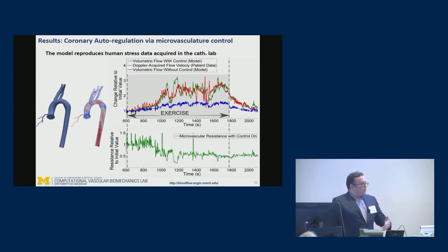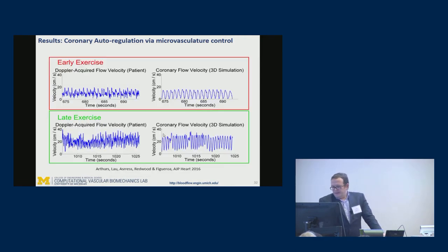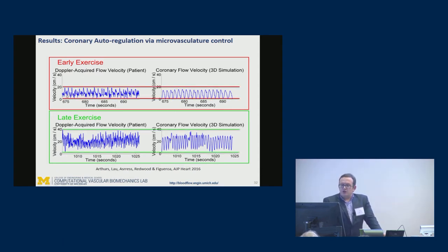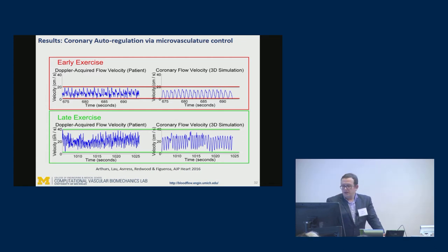Further comparison: Doppler velocities in the coronary vessel in the early exercise phase show the data and our 3D simulation matching well in frequency and range. Later in exercise, with a faster heart rate and higher flow, both data and simulation show higher frequency and a larger range, indicating more flow through the vessel.